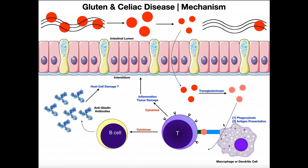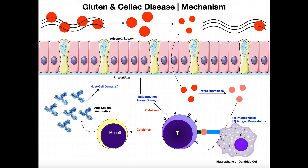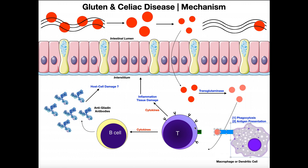Immune cells are waiting in the interstitium — that immunological barrier. If something manages to cross the intestinal wall that we don't want going further into the bloodstream, immune cells here can take care of it. Here we have a macrophage or a dendritic cell, which are phagocytes but also antigen-presenting cells. The macrophage can phagocytize these modified gliadin peptides — basically swallowing them up and breaking them down further.